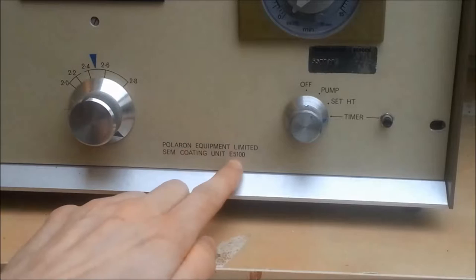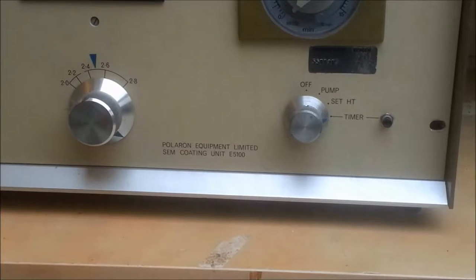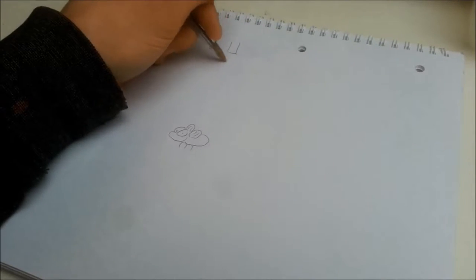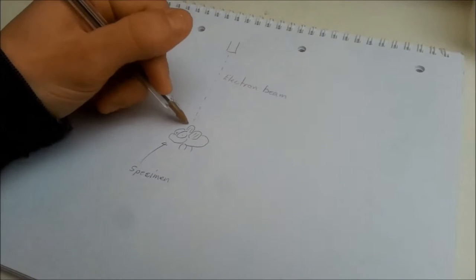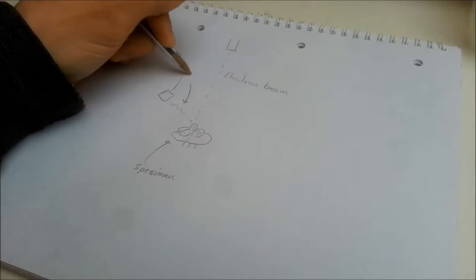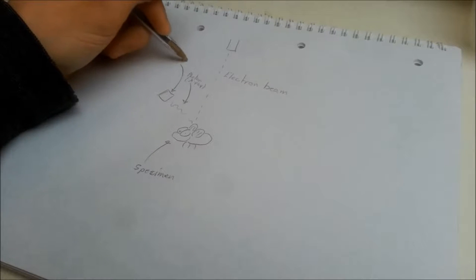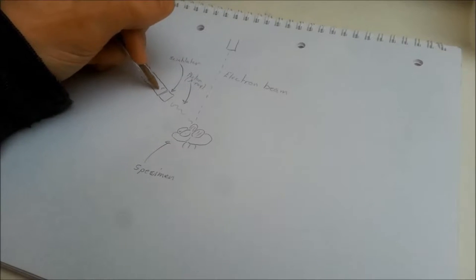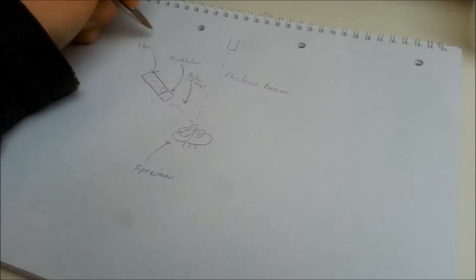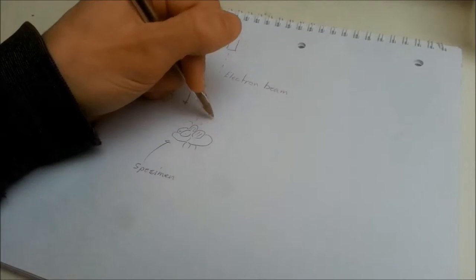I'm talking about the Polaron E-51-00. It was the follow-up to the E-50-00, which was one of the first commercial sputtering units for scanning electron microscopes. For those of you that are not aware, in order for something to be viewed on an electron microscope, the specimen needs to be conductive in order for the specimen to emit X-rays when struck by an electron or have the electron backscatter.